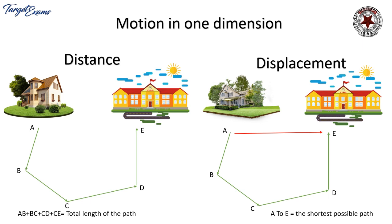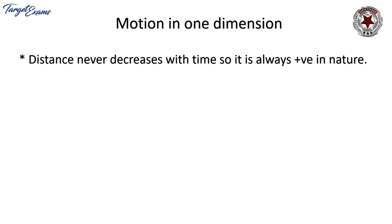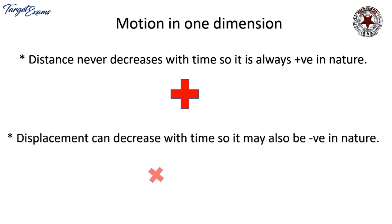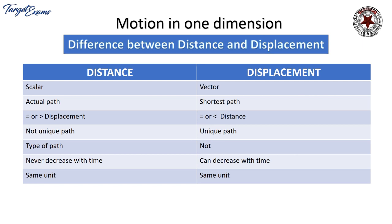Displacement is the shortest possible path between the initial and final positions — from A to E — and it has a direction, making it a vector quantity. Distance never decreases with time; it is always positive because any movement is counted. Displacement can decrease with time and may be negative when moving backward. Distance is always equal to or greater than displacement, while displacement is always equal to or less than distance.